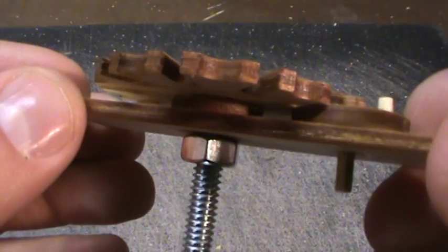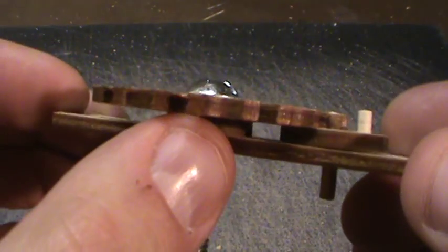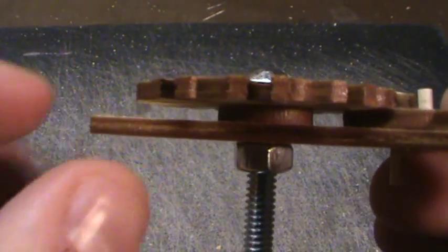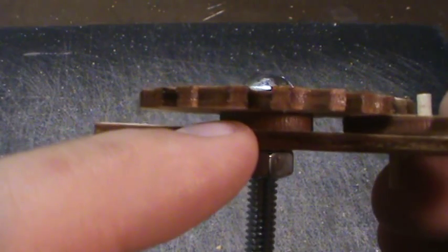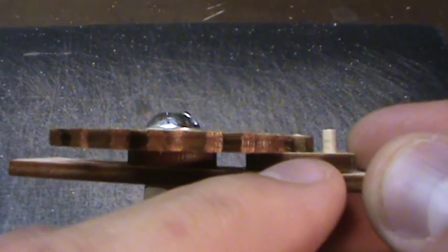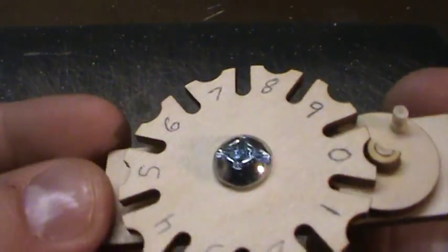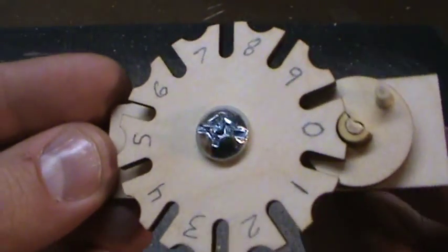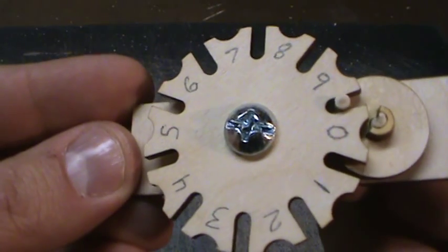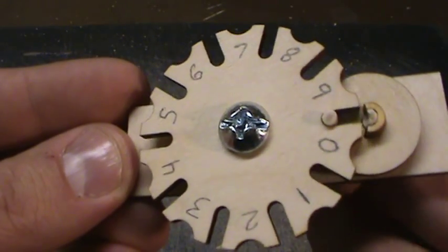The Geneva wheel is offset here with basically a washer to bring it up to the same height here as this pin. So once we spin the drive wheel here it engages and advances to the next one.